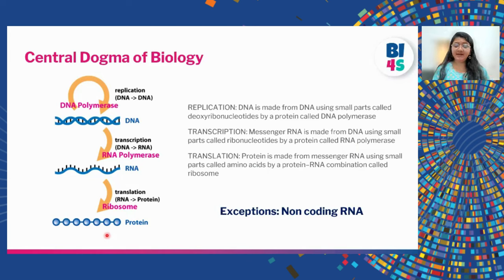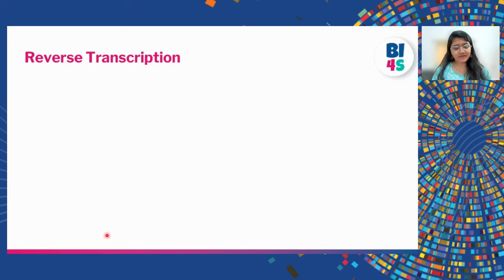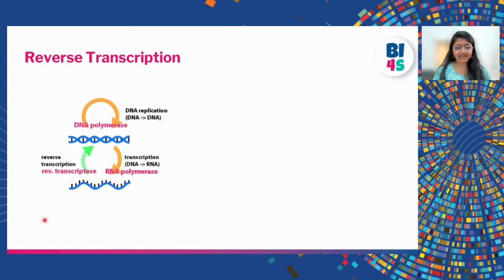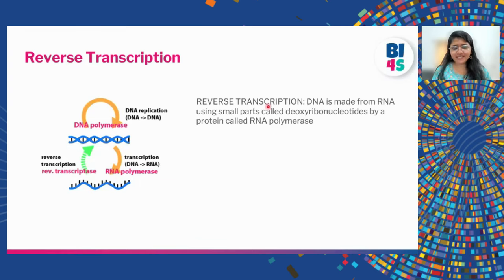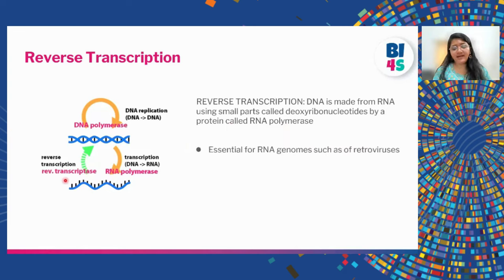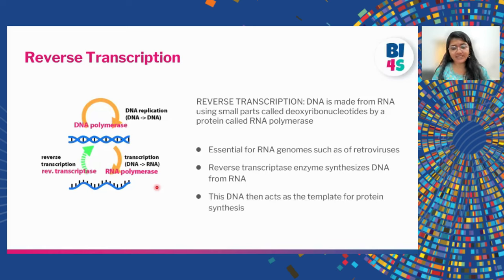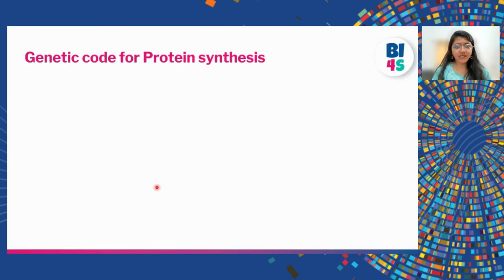There are exceptions that do not follow these rules — called non-coding RNA — which do not make proteins. There is also reverse transcription: since the genome can be either DNA or RNA, a protein called reverse transcriptase makes DNA from RNA. This process is essential for viruses such as SARS-CoV-2, whose genome is RNA. The reverse transcriptase makes DNA, and from that DNA, following the central dogma, more RNA and protein is made.